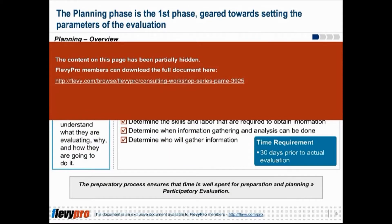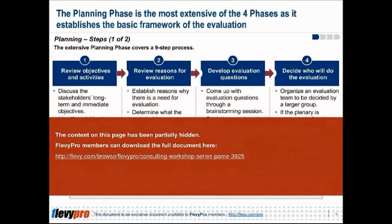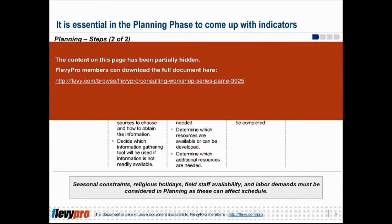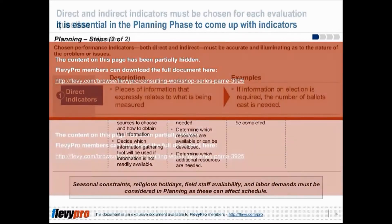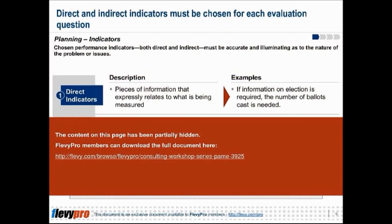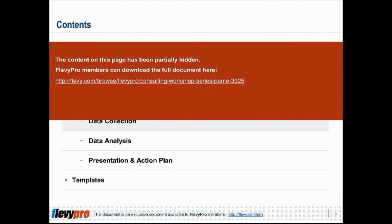The four-phase approach of PAME. PAME is best conducted using a four-phase approach. Planning phase: the primary objective of the planning phase is to help participants understand what they are evaluating, why, and how they are going to do it. The preparatory phase ensures that time is well spent on preparation and planning a participatory evaluation. Hence, this is the most extensive of the four phases as it establishes the basic framework of the evaluation.